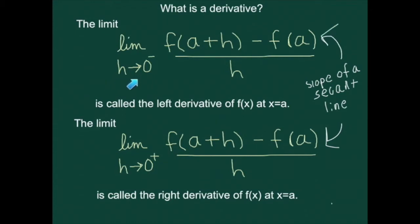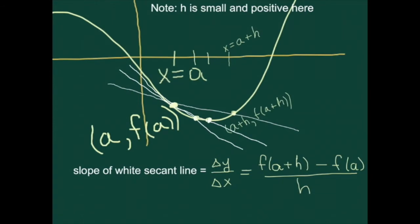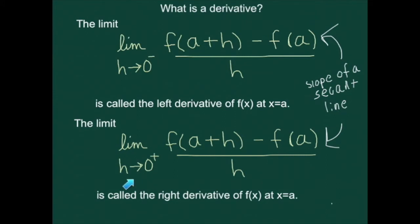Now let's go back to the first slide. These expressions here mean the slope of a secant line. Now let's address the limit part. If h approaches 0 from the left, the h values are negative. If h approaches 0 from the right, the h values are positive. Going back to the picture, the right-hand endpoint is getting closer and closer to x equals a while x equals a stays stationary. These secant lines in general look like they're approaching the tangent line, which only touches the function once at x equals a.